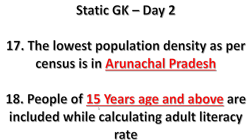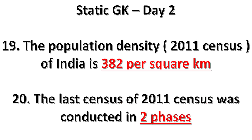People of 15 years of age and above are included while calculating the adult literacy rate. The population density in the 2011 census of India is 382 per square kilometer.